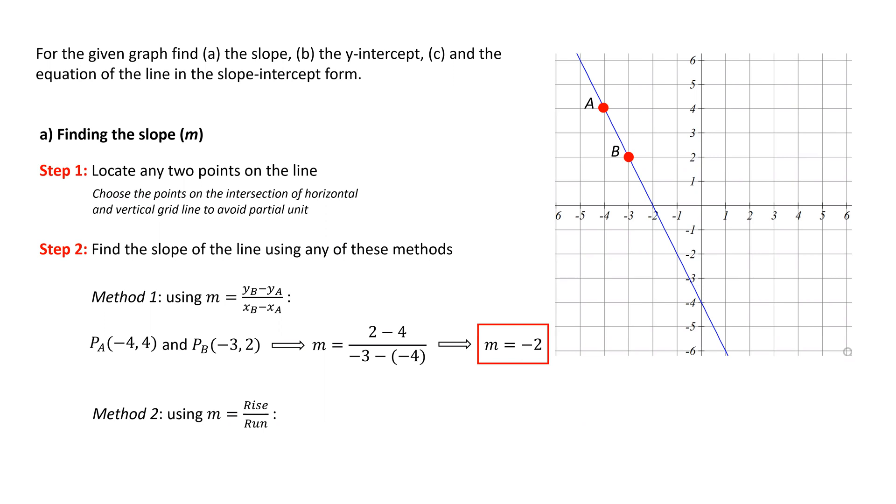Before we determine the rise and run, we should first know the sign convention. Rise is positive when we move upward and negative when we move downward. Run is positive when moving to the right and negative when moving to the left.